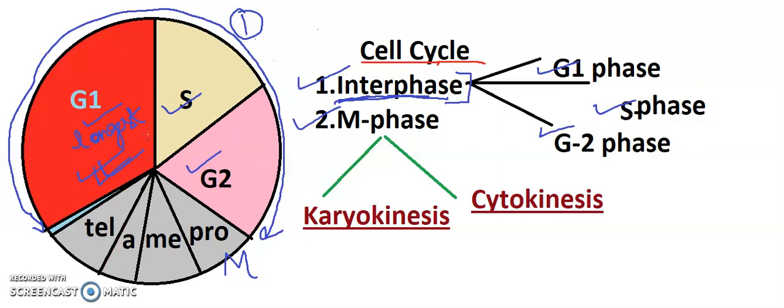In this phase, protein synthesis starts and cell is in preparation for DNA replication. S-phase we call synthesis phase. This is called synthesis phase and this is growth phase one and growth phase second.